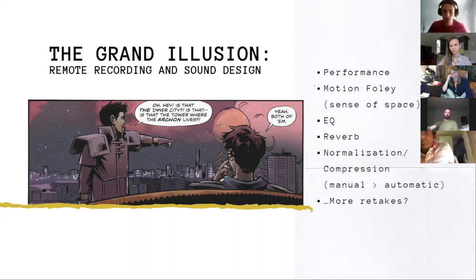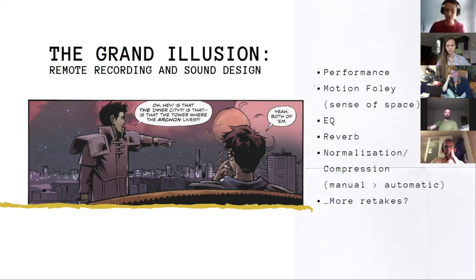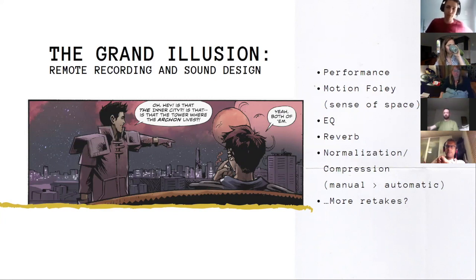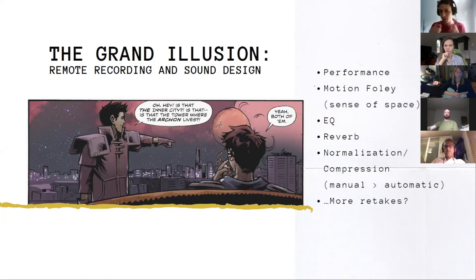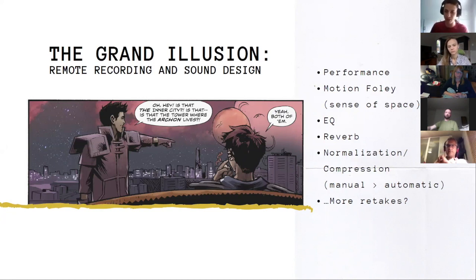The picture I'm showing is two people chatting on a rooftop overlooking a city while one is picking their nose — an interesting setting with motion and character. We're going to achieve this through motion foley, equalization, reverb, normalization and compression, and asking actors for more retakes. Foley is the sounds of movement — brushing your arm, moving around as if you're the character. Equalization is a type of volume control. Reverb creates a sense of space.